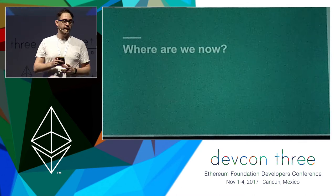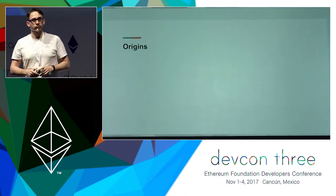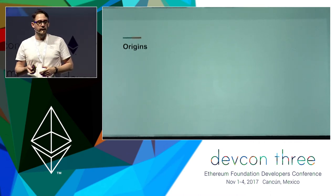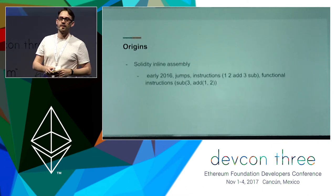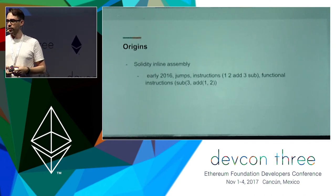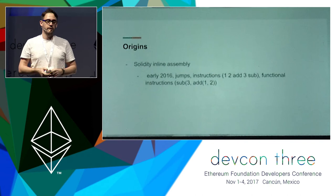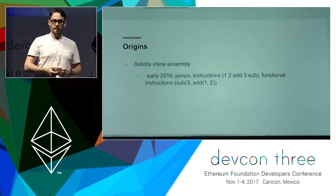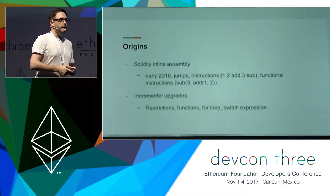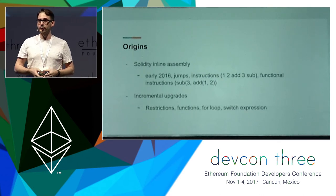So where do we stand right now? Julia looks familiar to those who use Solidity because it looks kind of like the inline assembly Solidity has — and that's because it is an evolutionary step from inline assembly. Inline assembly was introduced last year; it supported jumps, instructions, and functional instructions. But over time we restricted that — we removed the more risky parts — and we added new features like functions, for loops, and switch statements.